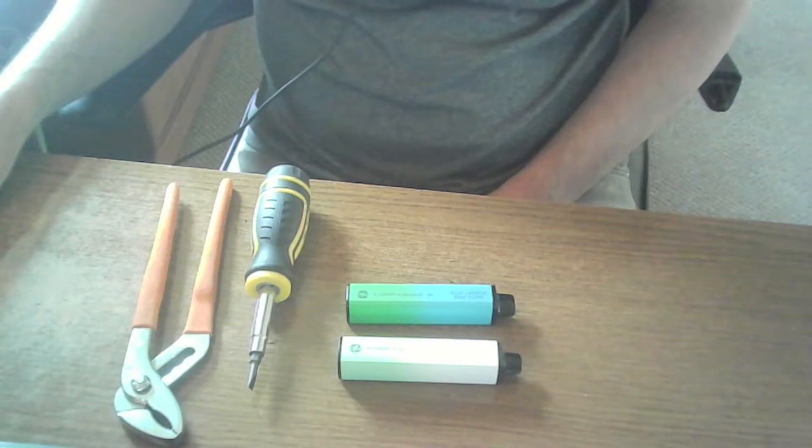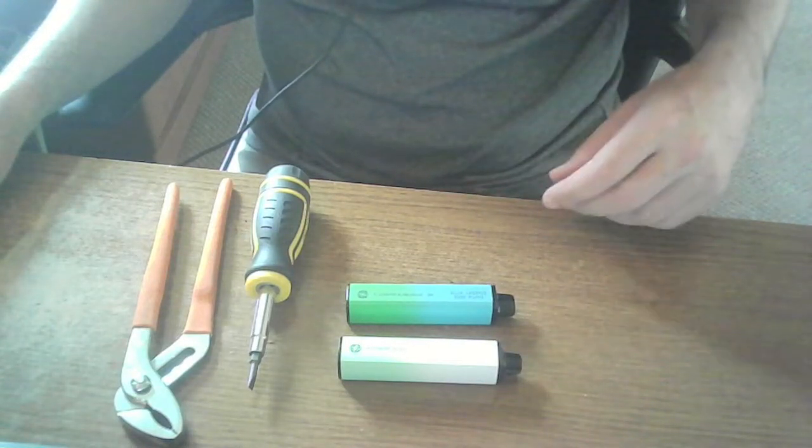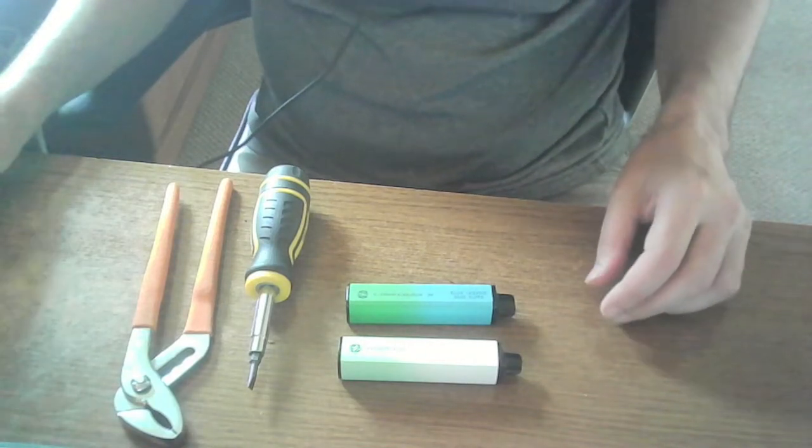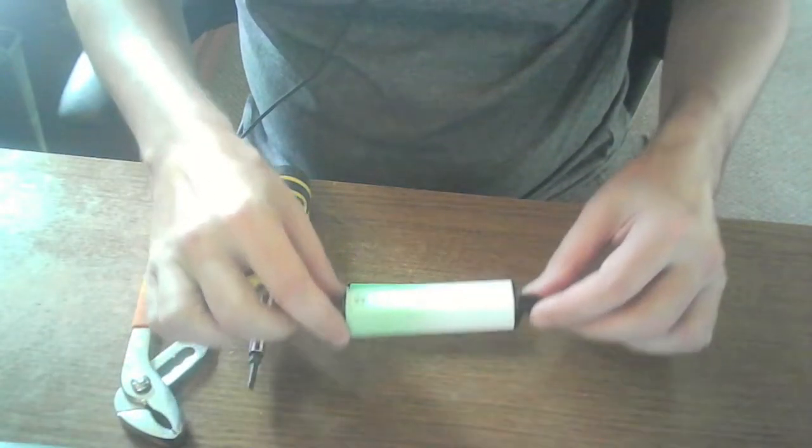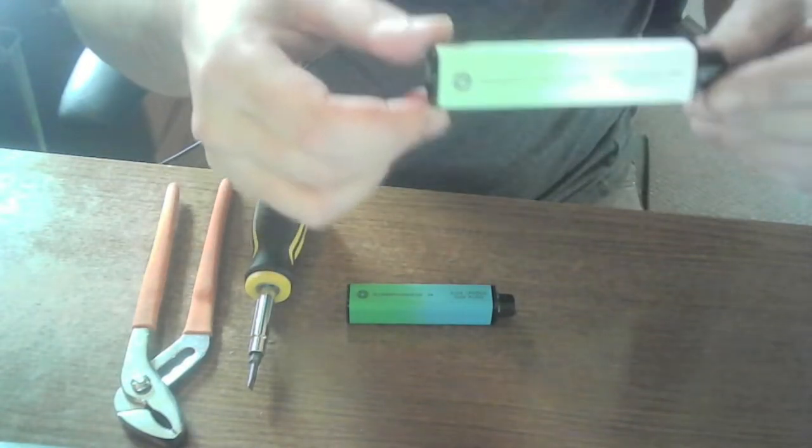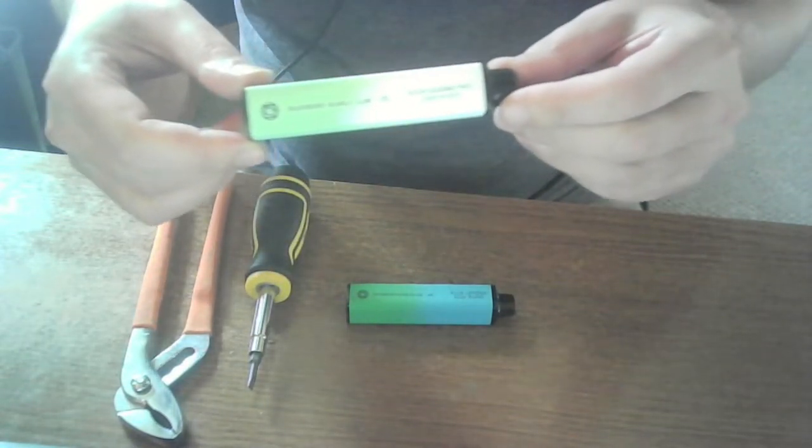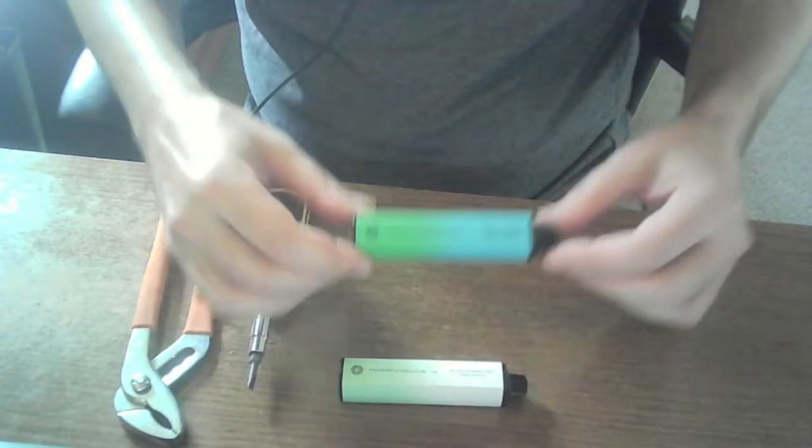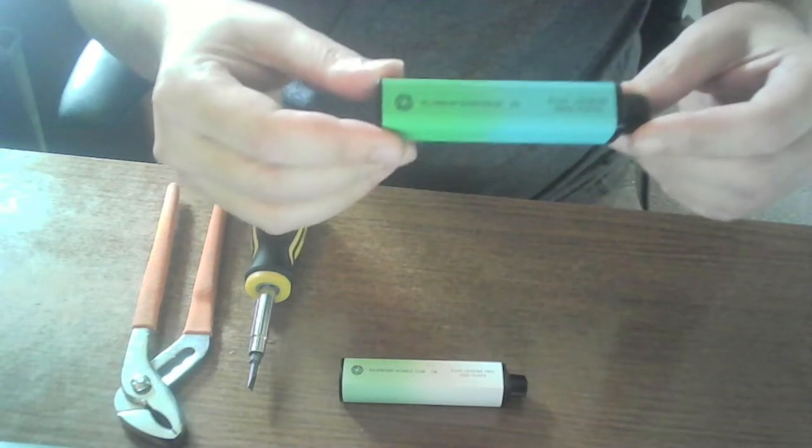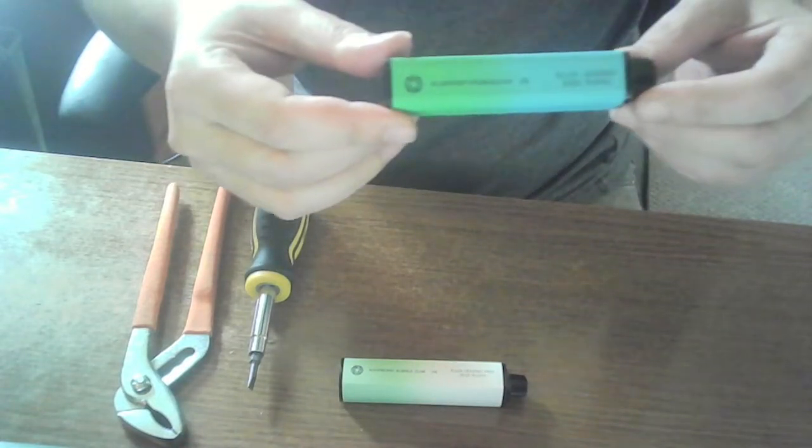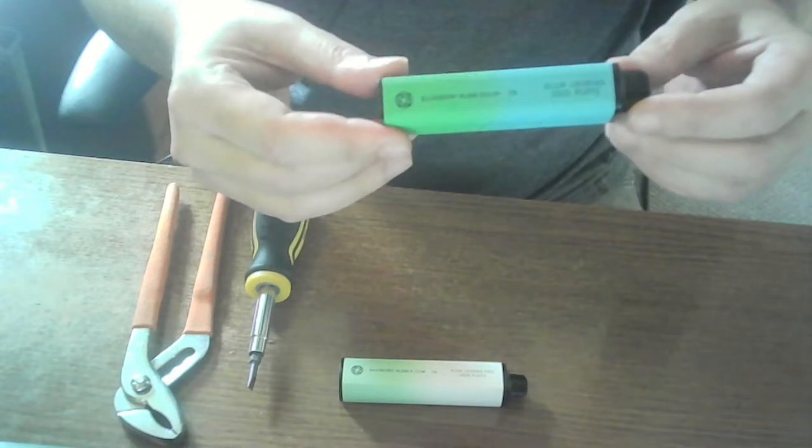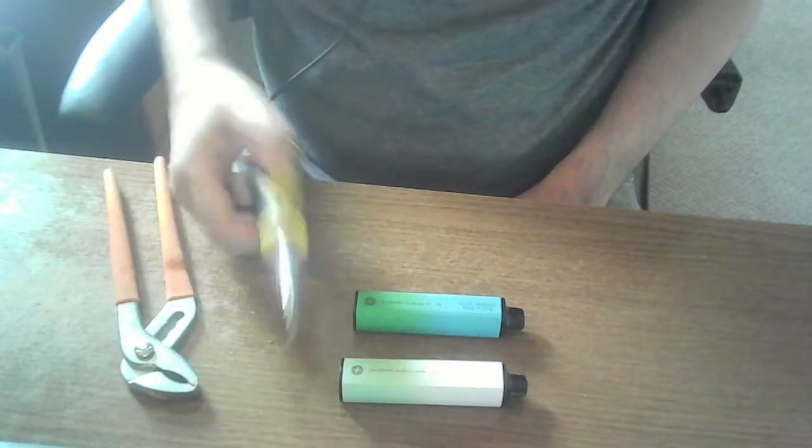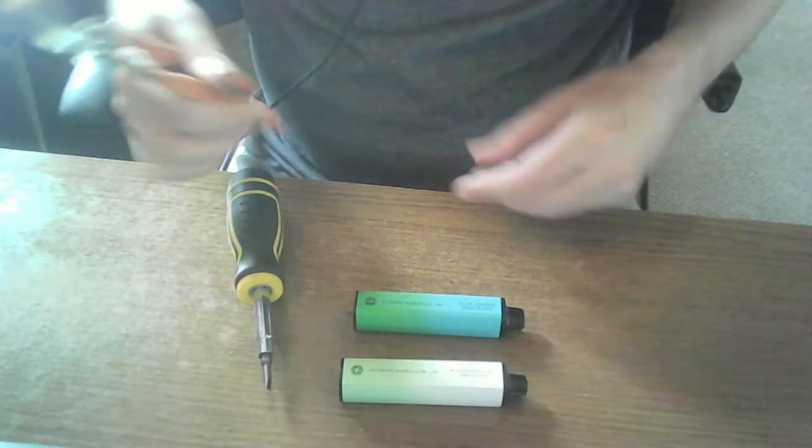Okay, here we go. This video is to refill your Elux Legend Pro, which is the rechargeable edition disposable vape pen, with any leftover juice that might be in your Elux Legend, the non-rechargeable version. You can do this with a pair of monkey pliers or whatever, and a screwdriver. That's all you need. Right, so let's start.